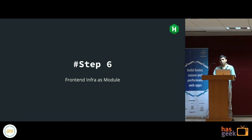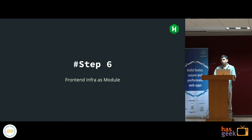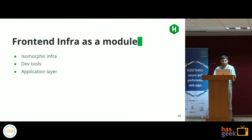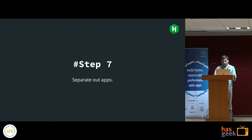We've now moved almost all our modules and are in the phase of separating our applications. While doing that, we saw a lot of infrastructure code was similar across all apps, so we decided to separate out the front-end infrastructure as a Node module. That infrastructure contains our isomorphic infrastructure built for our specific use case, the dev tooling part, and the application layer. In the application repository, there will only be application code — no common code.